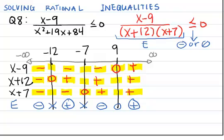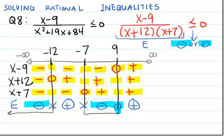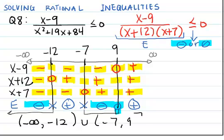According to my inequality, I'm looking for areas on the number line where the expression is negative or 0. The expression is negative on the leftmost interval, negative between negative 7 and 9, and equal to 0 only when x equals 9. So the solution excludes x equals negative 12 and x equals negative 7. In interval notation, the solution set is negative infinity to negative 12, open, union, open negative 7 to 9, closed.